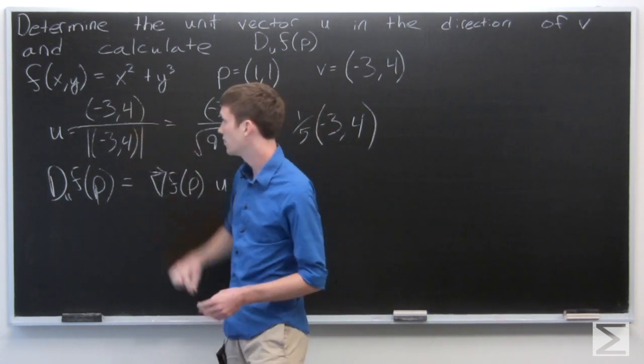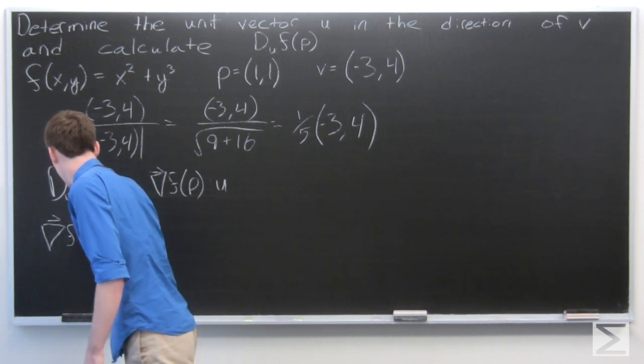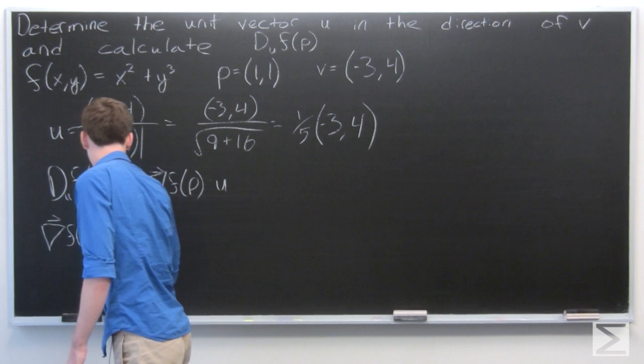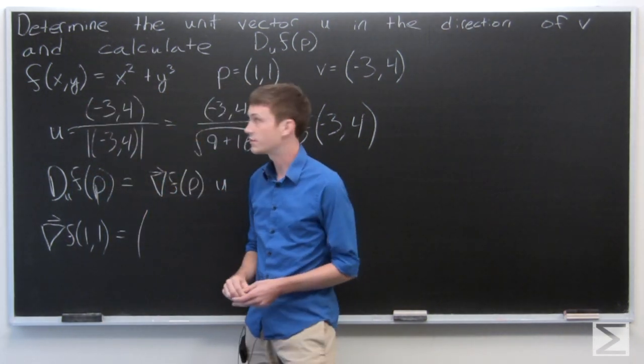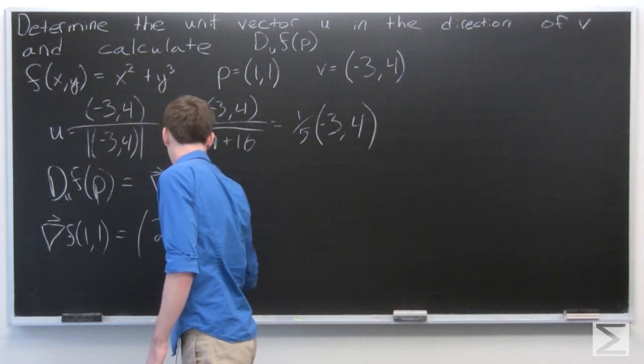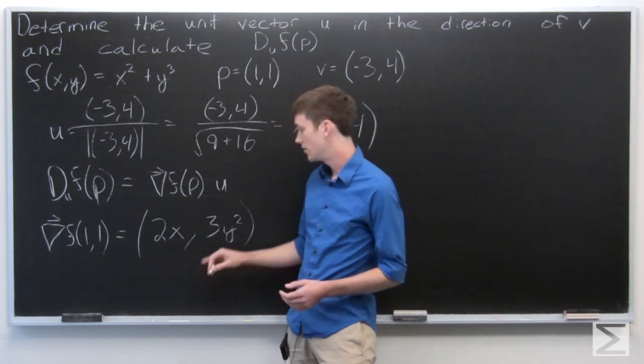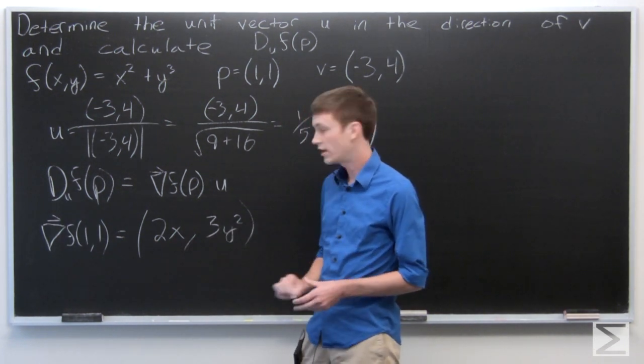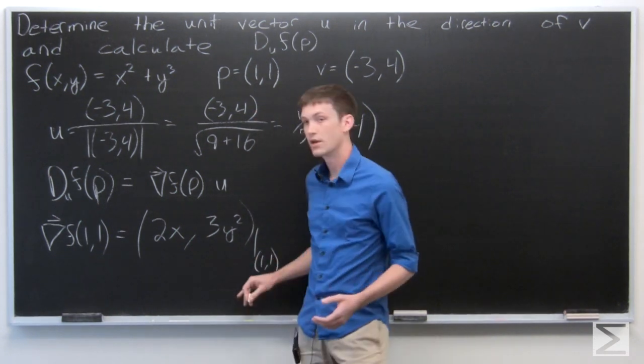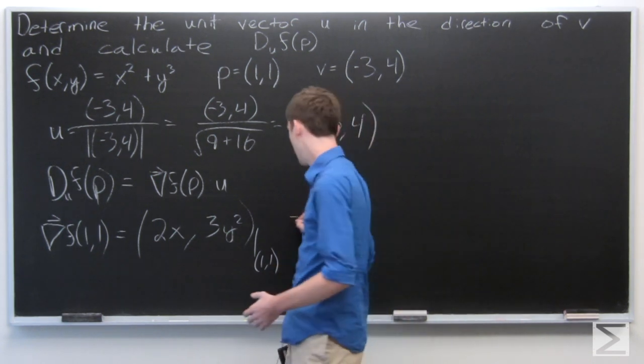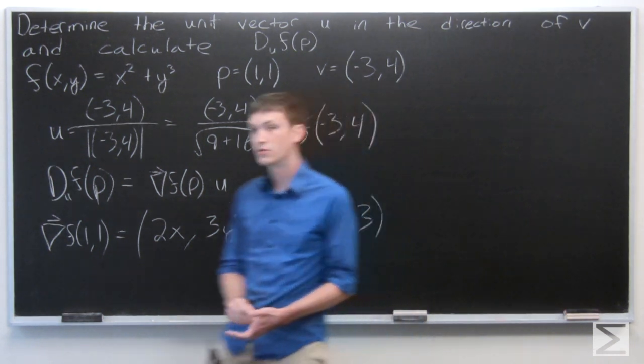So we can take the gradient of this. The partial derivative of f with respect to x is 2x, and the partial derivative of f with respect to y is 3y squared. And we want that when x is equal to 1 and y is equal to 1, which is (2, 3).